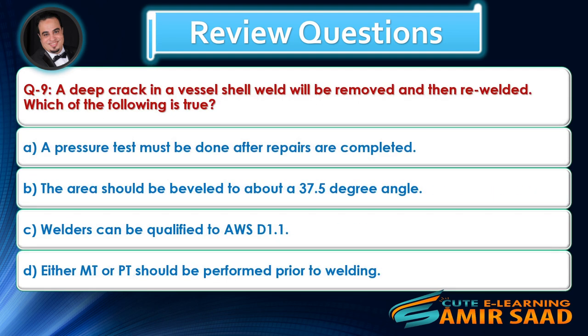Question 9: A deep crack in a vessel shell weld will be removed and then re-welded. Which of the following is true? Answer is D.